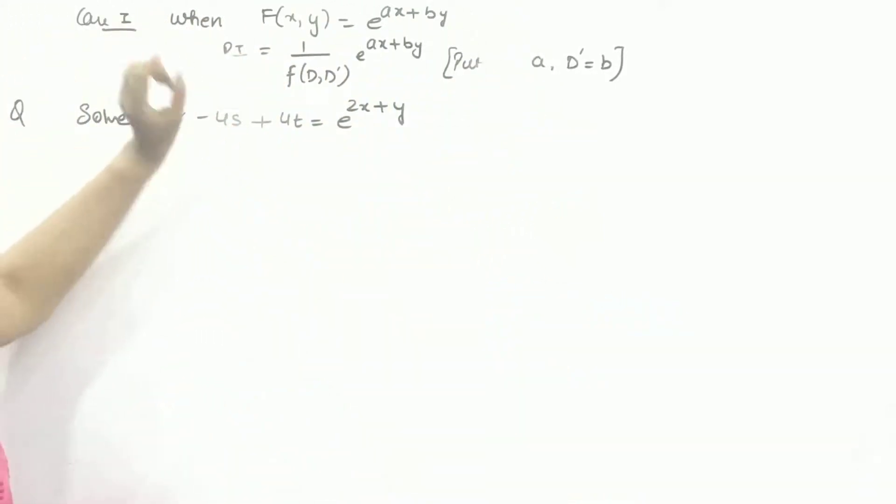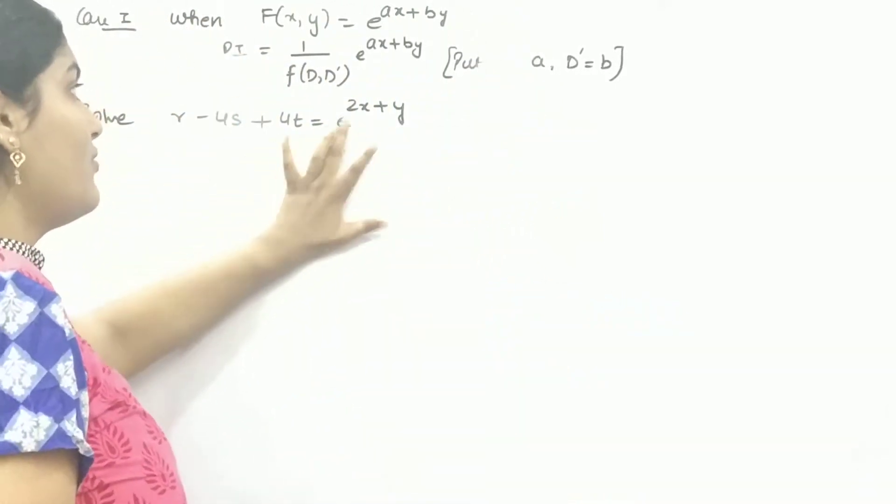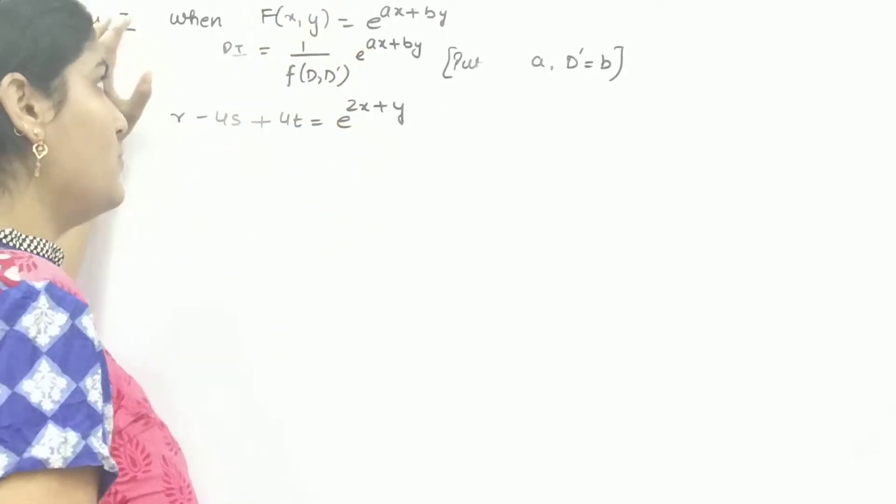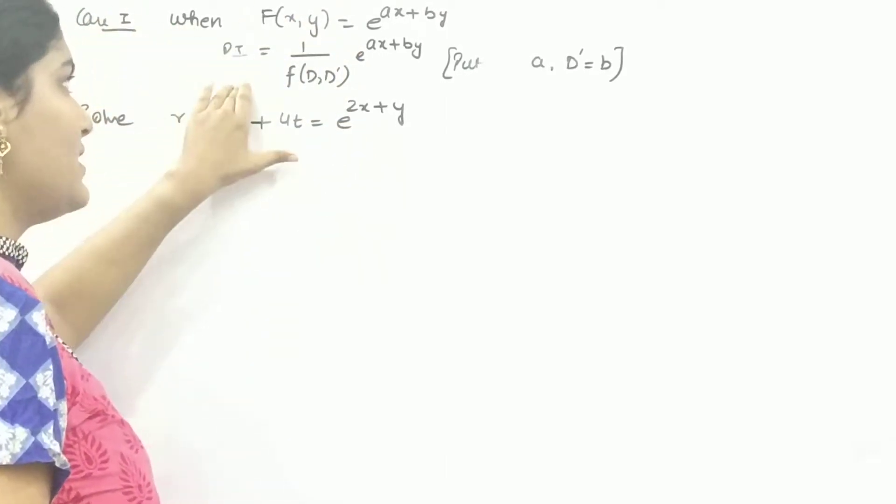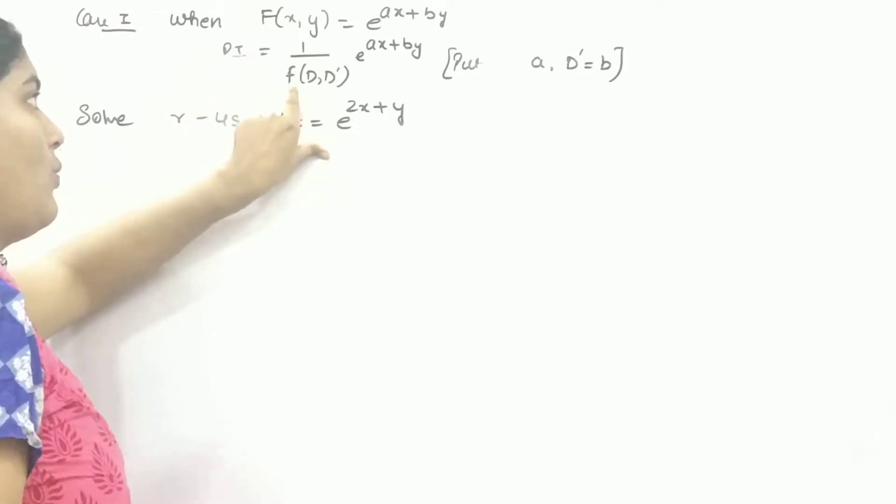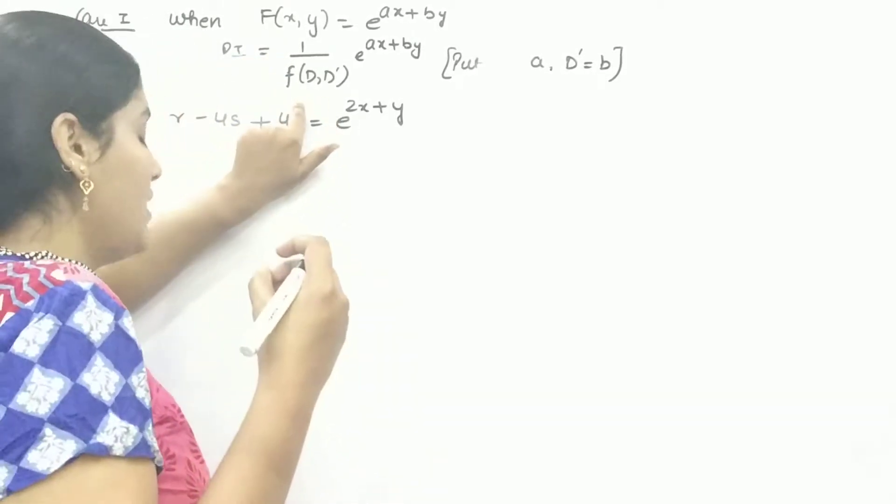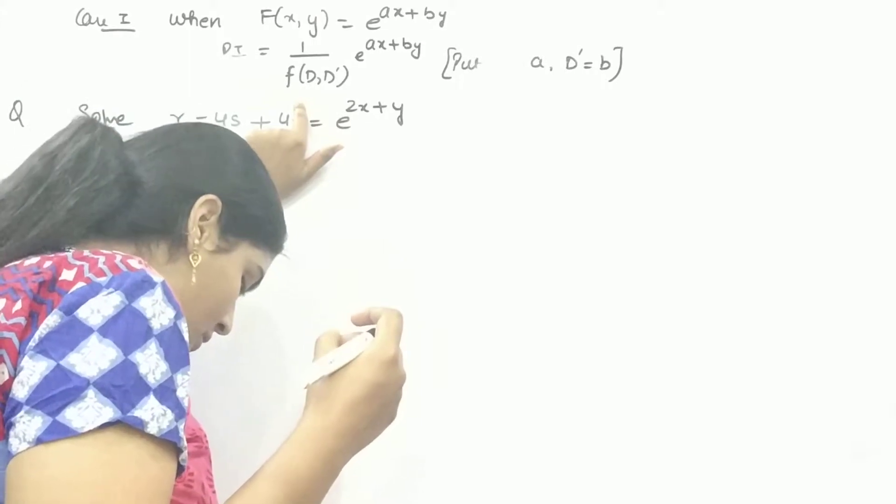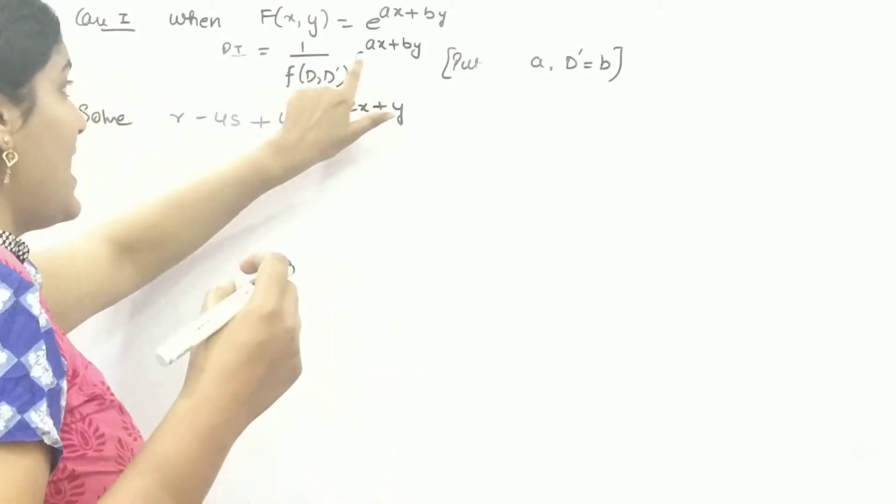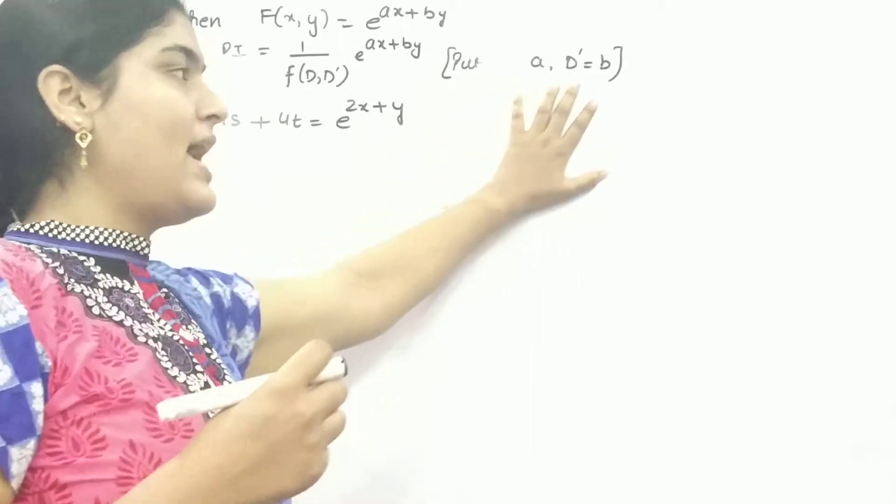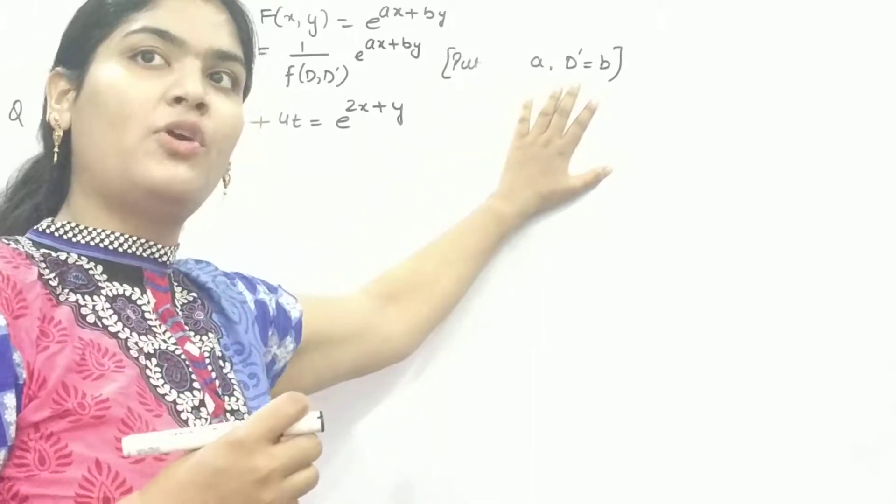If in right hand side something in the form of exponential is given to you, then the particular integral formula will be one upon your auxiliary equation. But you need to put A in place of D and B in place of D dash.